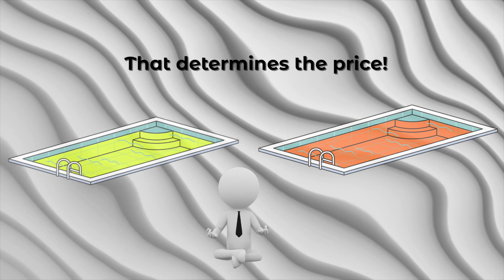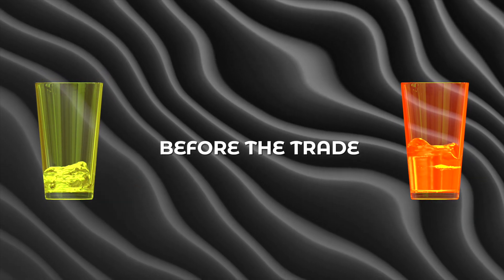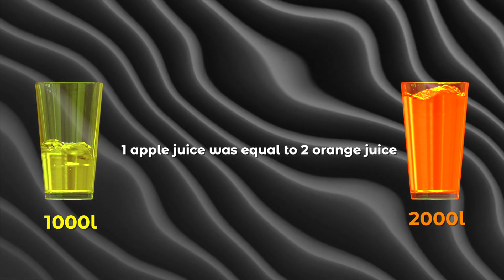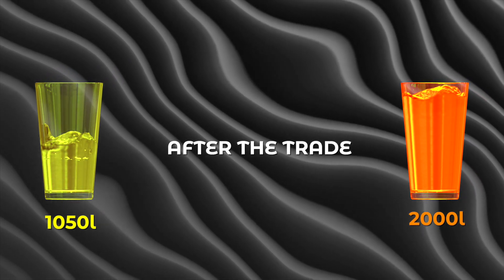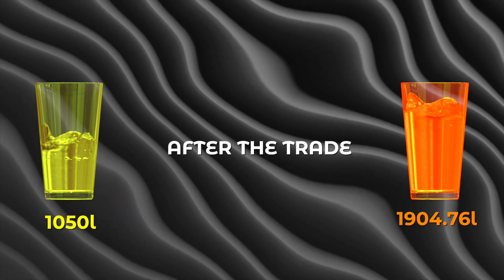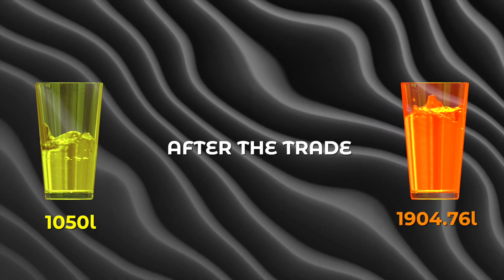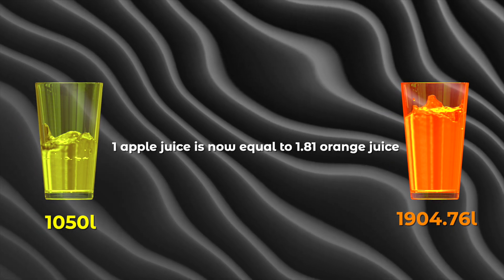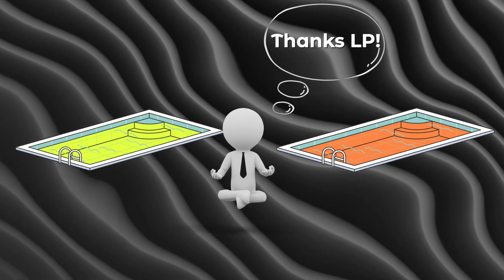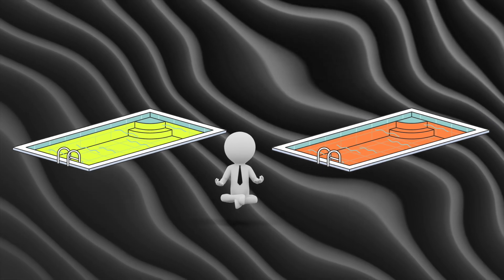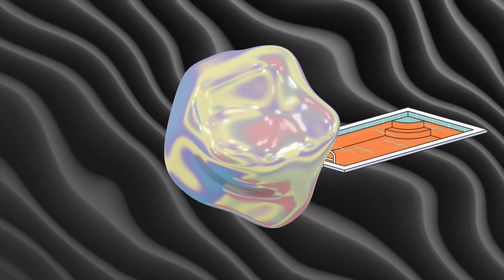Let's compare. Before the trade, there was 1,000 apple juice to 2,000 orange juice. After the trade, now there is 1,050 apple juice to 1,904.76 orange juice. So 1 apple juice is now equal to 1.81 orange juice. You see, it was the liquidity pool made of apple juice and orange juice that allowed for this trade to happen and for a market price between the two to form.